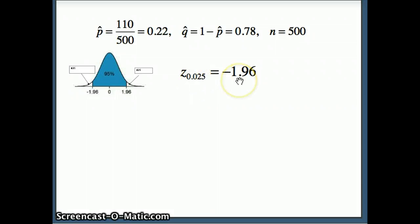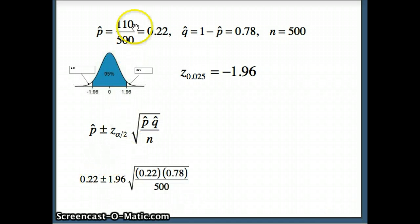Our formula is p-hat plus or minus z alpha by 2 square root of p-hat q-hat over n. So our p-hat is 0.22 plus or minus 1.96—again we don't need to worry about the negative sign—times the square root of p-hat 0.22, q-hat 0.78, over 500.